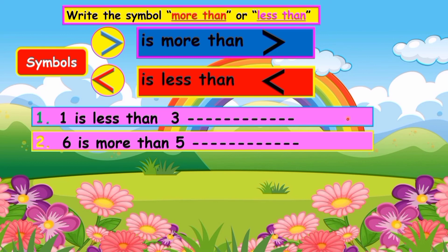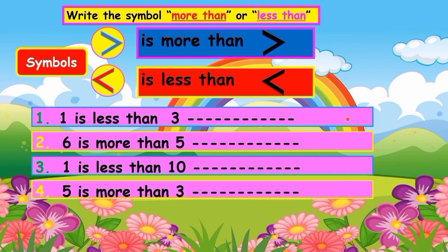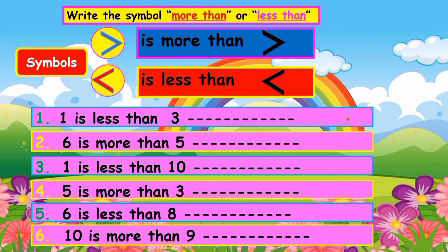Number three: one is less than ten, so write one is less than ten. Number four: five is more than three. Number five: six is less than eight. And the last number: ten is more than nine.